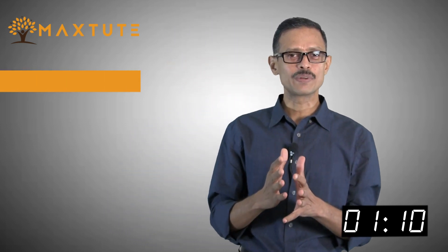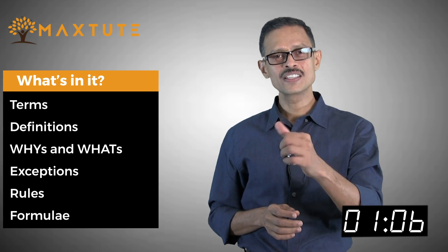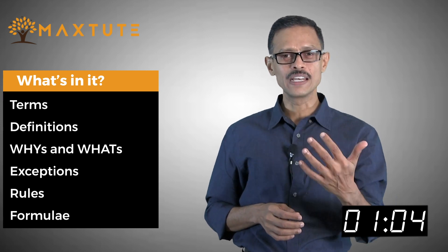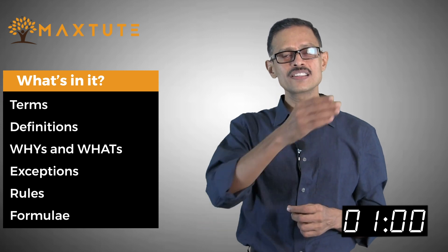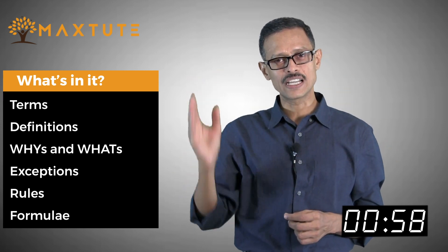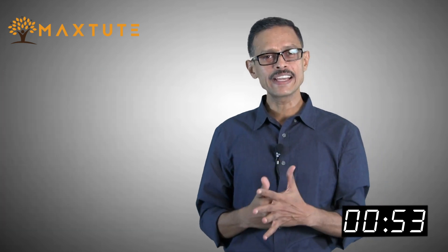Minitube videos are a collection of videos which will not run for more than 150 seconds — less than two and a half minutes. They basically cover terms, definitions, whys, whats, exceptions, rules, and formulae — everything related to math that you're likely to see in school, starting from class 6 all the way up to class 12. The idea is to pick one single idea, one single term, and make it available to you in less than two and a half minutes. Many of the Minitube videos actually get over in under a minute and a half.